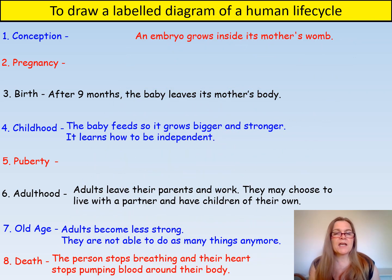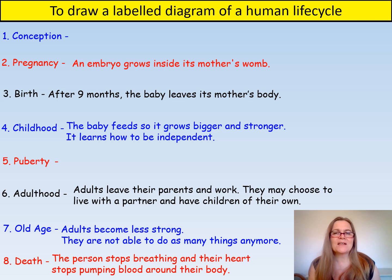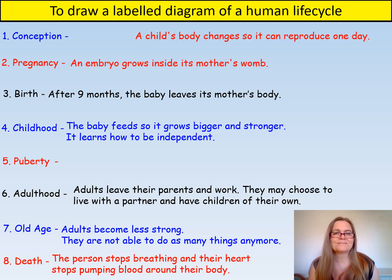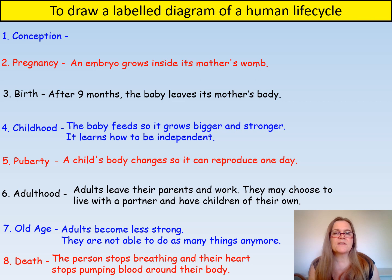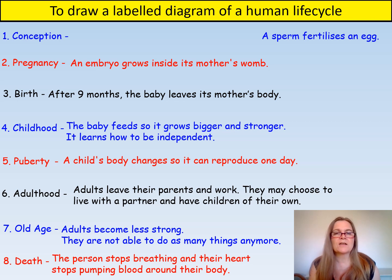How about 'an embryo grows inside its mother's womb'? Yes, this is pregnancy. A baby inside its mother is called an embryo. Embryos grow inside their mother's womb, which is also called a uterus. Only females have a womb. What about 'a child's body changes so it can reproduce one day'? Yes, this is puberty — the stage of the life cycle that you are about to move into. You will grow and your body will change so that you will look like an adult, then you can have children if you want to. Finally, conception is when a sperm from a man fertilises — which just means joins — an egg inside the woman.